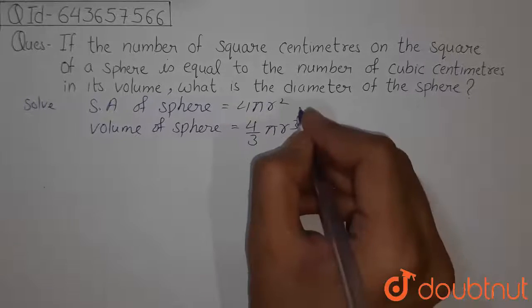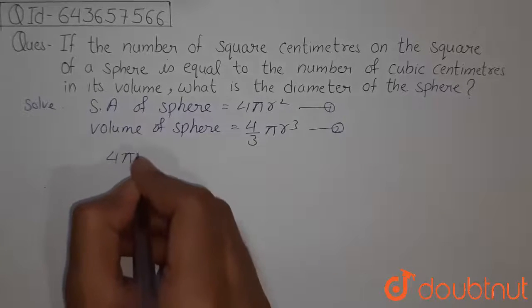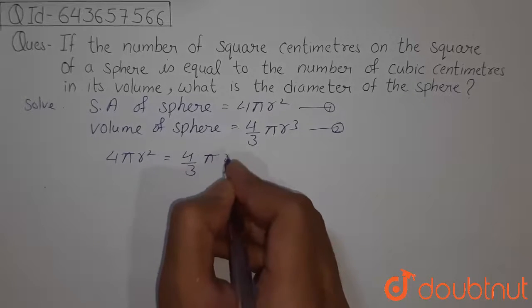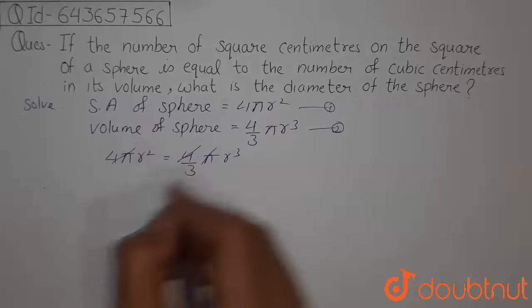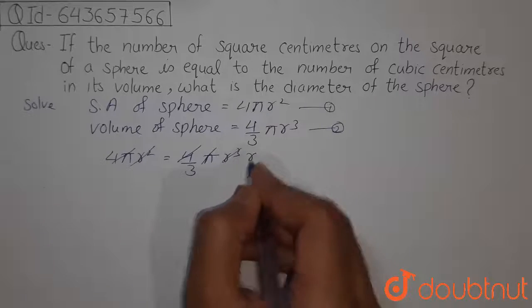Now these two are equal according to the question. So we can write 4πr² equals 4/3 πr³. Now 4π will cancel out and r² will cancel out, leaving behind one r.